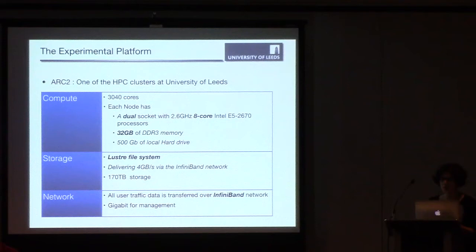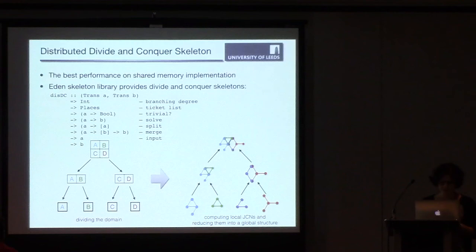We have run our experiments on HPC Wales, one of the HPC clusters at University of Leeds. Each node in the cluster has 16 cores and 32 gigabytes of memory. There is a Lustre file system and data is transferred over InfiniBand network. Also, in our shared memory implementation, our divide and conquer skeleton gives us the best performance. Eden also has several implementations of divide and conquer skeleton. So it was a good starting point for distributed implementation.